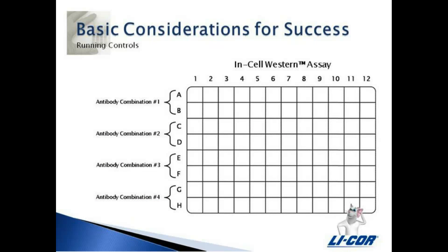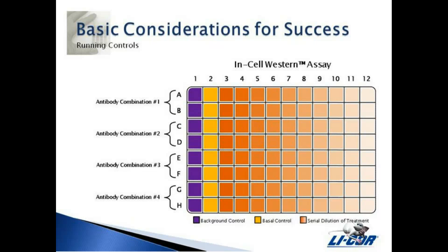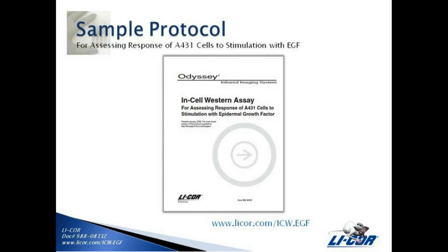It is equally important to run several controls during the assay. When planning your ICW, select appropriate wells for a background control. These wells will receive only secondary antibody. Also plan for several wells that have either upregulated or downregulated expression of the target protein. These will function as basal controls, either positive or negative. The remaining wells will receive a serial dilution of your chosen treatment.